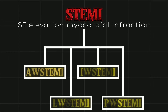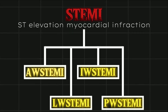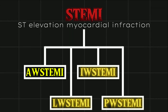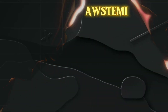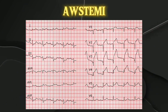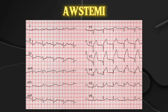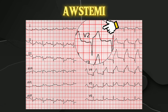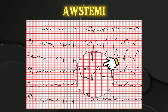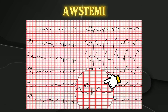Let's start with the anterior wall. In anterior wall myocardial infarction, there is ST elevation in leads V2, V3, V4, and V5.